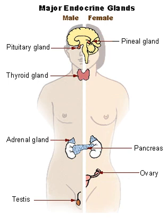In contrast, exocrine glands, such as salivary glands, sweat glands, and glands within the gastrointestinal tract, tend to be much less vascular and have ducts or a hollow lumen.